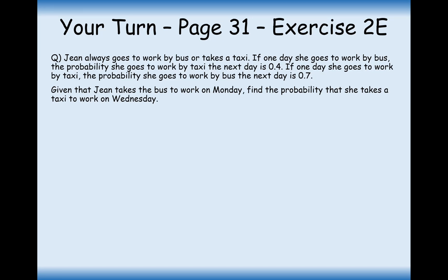Right then, let's get stuck in. Jean always goes to work by bus or takes a taxi. If one day she goes to work by bus, the probability she goes to work by taxi the next day is 0.4. If one day she goes to work by taxi, the probability she goes to work by bus the next day is 0.7. Given that Jean takes the bus to work on Monday, find the probability that she takes a taxi to work on Wednesday. So she's taken a bus to work on Monday — we can start by assuming that and think about Tuesday. On Tuesday, we've got bus and taxi. If she took a bus on Monday, the probability she goes by taxi the next day is 0.4, so it's 0.4 for taxi and 0.6 for bus on Tuesday.